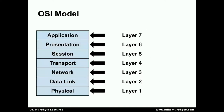There are seven layers in the OSI model. Starting from the bottom, we have layer one, the physical layer. Layer two is the data link layer, above the physical layer. Layer three, the network layer, sits above the data link layer. Layer four, the transport layer, sits above the network layer. Layer five, the session layer, sits above the transport layer. Layer six, the presentation layer, sits above the session layer. And finally, layer seven is the networking application itself, which conceptually communicates with the presentation layer.